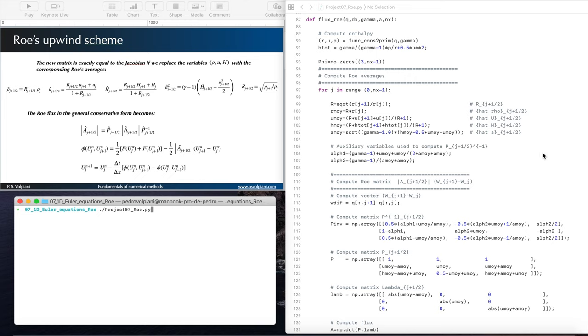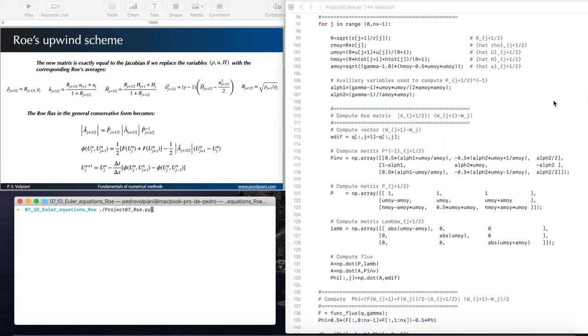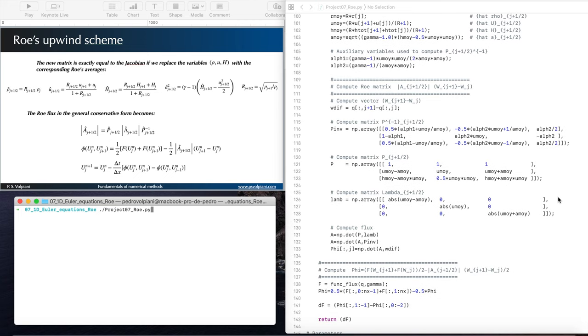So how do we do that? We need first to compute the Roe averages. These averages here are computed in this part. Then we need to compute the Roe matrix and to compute the Roe matrix we need P hat, lambda hat and P minus 1 hat. That's where we compute them. And at the end we compute the flux phi. So right here we're computing this equation.